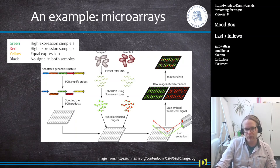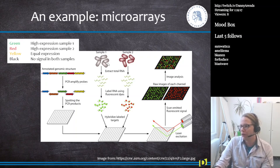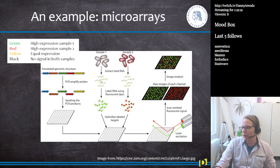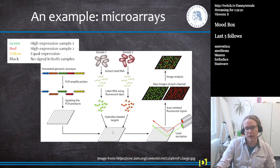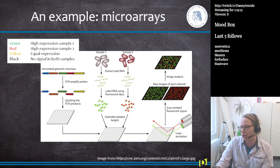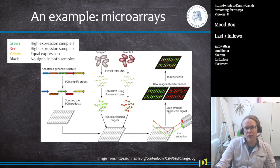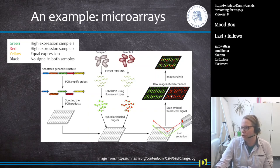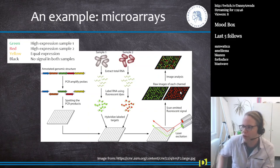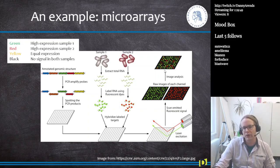Then we have two samples — for example, normal lung tissue and lung cancer tissue. We extract the RNA from these samples and color the RNA using Cy3 or Cy5. We then take both samples, mix them together, and put them on the microarray. There are then two lasers: one measures the red channel, the other measures the green channel. In the end, we get raw images of each channel, which are then combined using software tools to create the microarray picture.